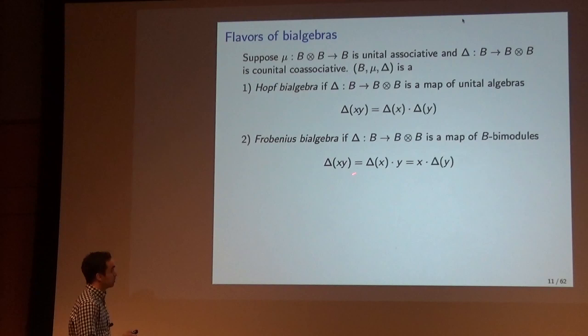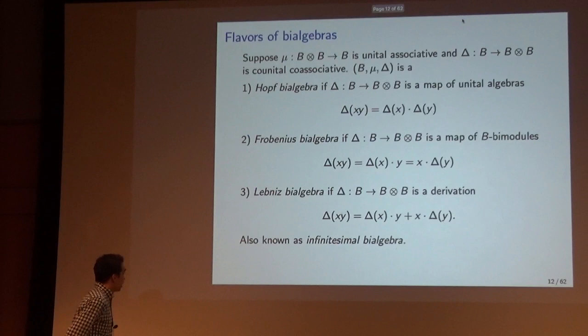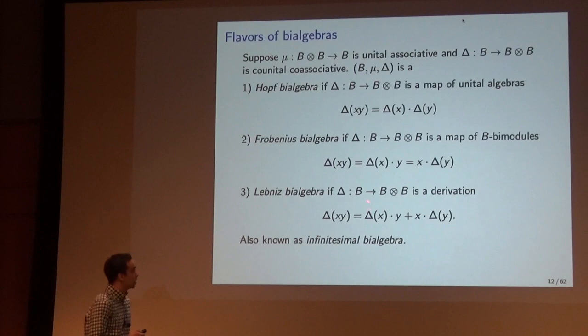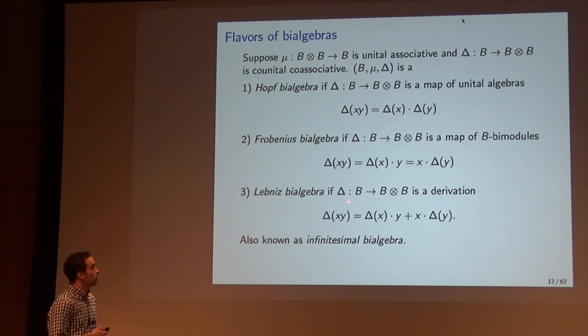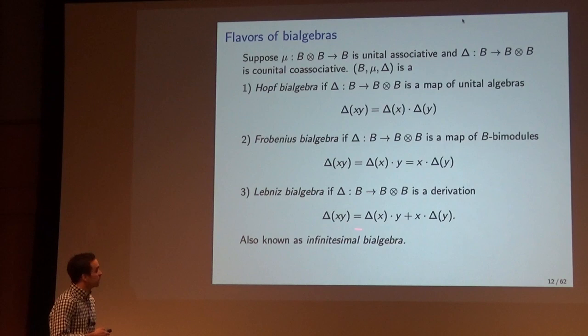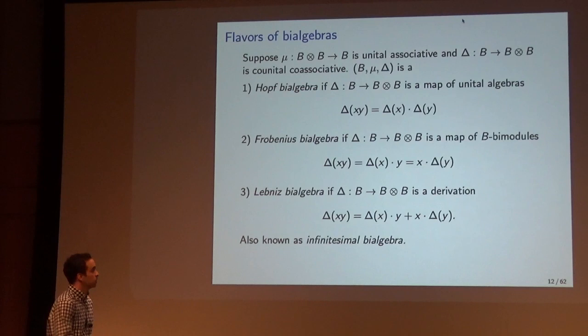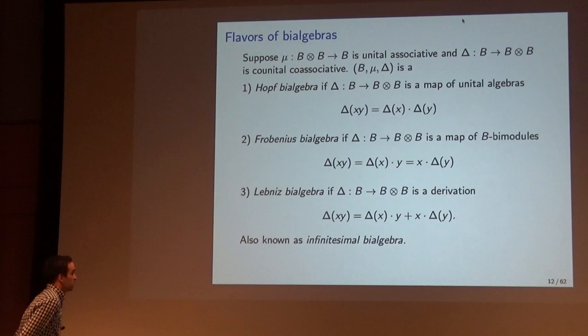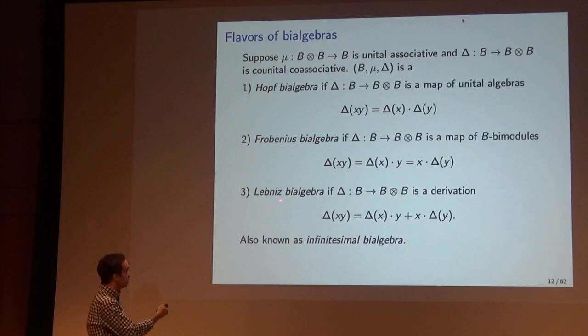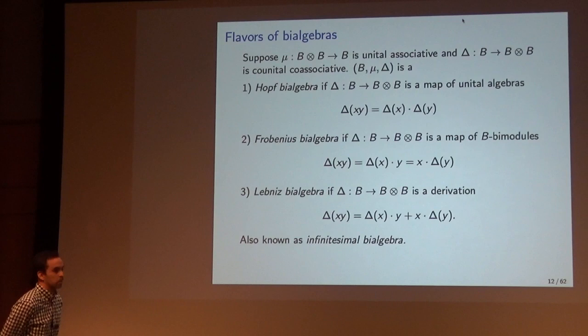We will call it a Frobenius bi-algebra, and this is the equation — it's an equality of three terms. I will call a Leibniz bi-algebra a bi-algebra in which the co-product satisfies the Leibniz rule, i.e., if the co-product is a derivation of the product. The compatibility equation can be written in terms of right and left bi-module actions on B tensor B. These are also known as infinitesimal bi-algebras in the literature, but for symmetry I wanted to attach the name Leibniz, since Leibniz is the one to prove the product rule for differentiation.